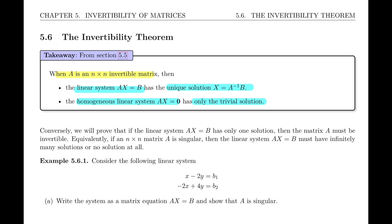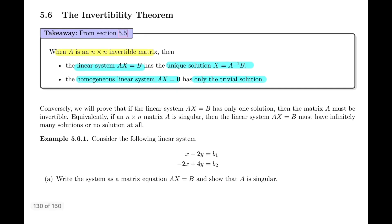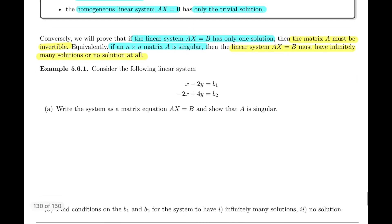The converse of that statement is: if we start from the result that the linear system has only one solution, then the matrix A must be invertible. We haven't proven this yet, but we will. Another way of stating this converse is that if the matrix is singular — not invertible — then the linear system must have infinitely many or no solutions at all. So we're going to convince ourselves of this using the following example.